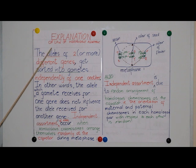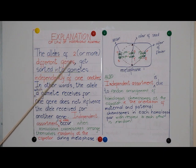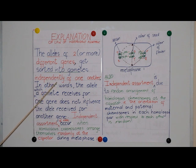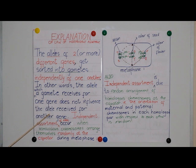Explanation of Mendel's law of independent assortment: the alleles of two or more different genes get sorted into gametes independently of one another. In other words, the allele which a gamete receives for one gene does not influence the allele received for another gene.